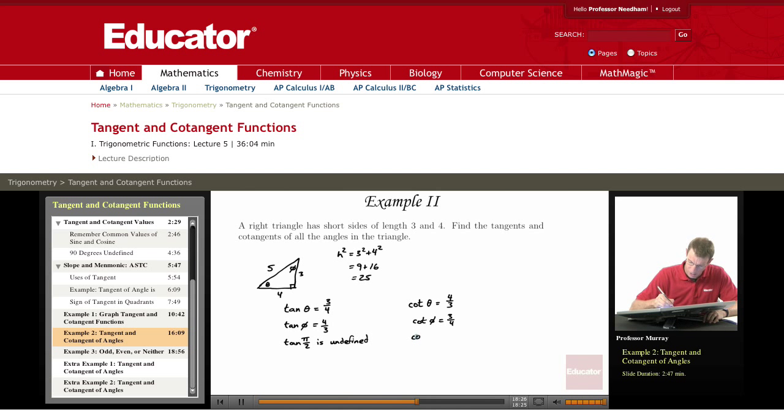And the cotangent of pi over 2, which is the cosine over the sine, so that's 0 over 1, is just zero.